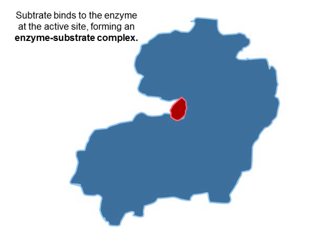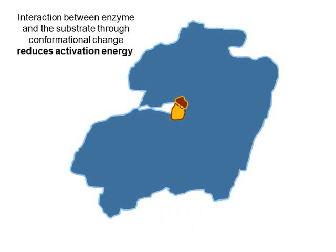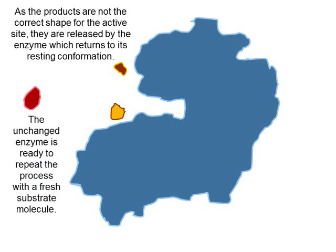In summary: the substrate binds to the enzyme at the active site, forming what we call an enzyme-substrate complex. That induces a conformational shift in the enzyme structure that drives the chemical reaction. We have what's called induced fit, where the substrate binding to the active site causes conformational change within the enzyme itself. That leads to the chemical reaction occurring, it reduces activation energy such that the reaction happens faster, and we end up with products with the enzyme returning to its correct original shape unchanged, ready to repeat the process again and again.